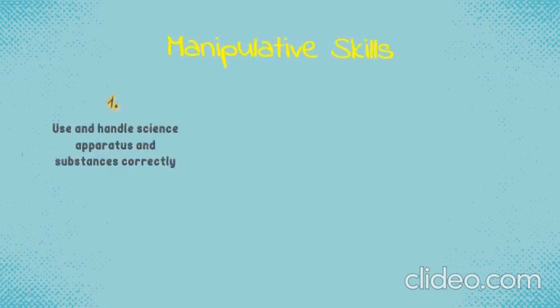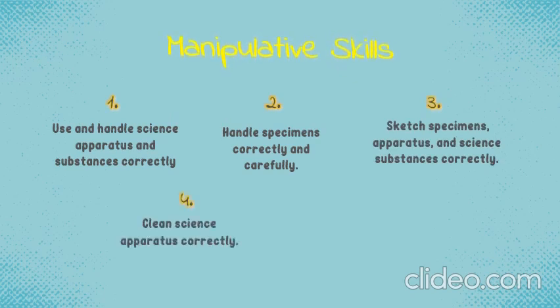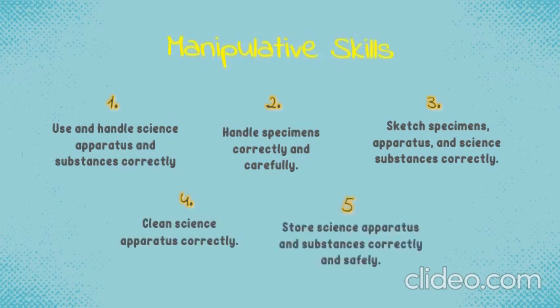All the manipulative skills are recorded here, students. We should use manipulative skills to do experiments or investigations. Number 1: use and handle science apparatus and substances correctly. Number 2: handle specimens correctly and carefully. Number 3: sketch specimens, apparatus and science substances correctly. Number 4: clean science apparatus correctly. Number 5, lastly: store science apparatus and substances correctly and safely.